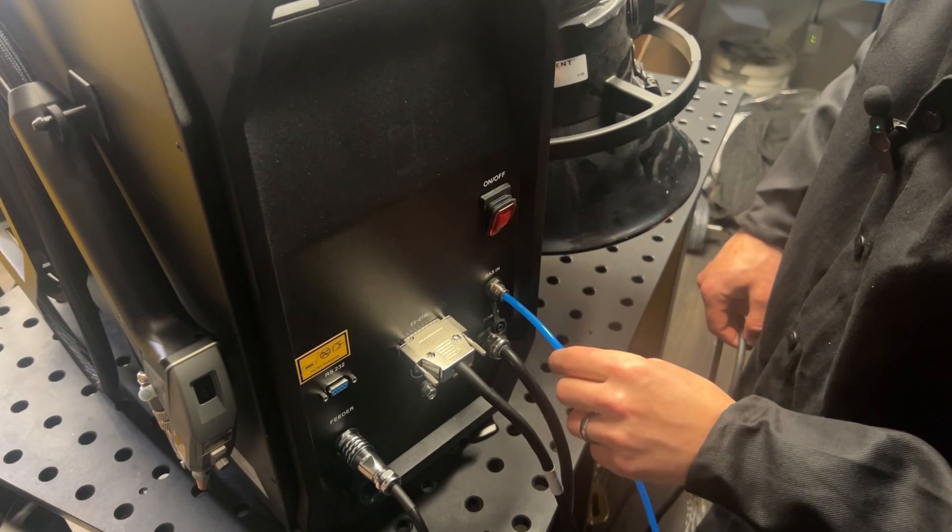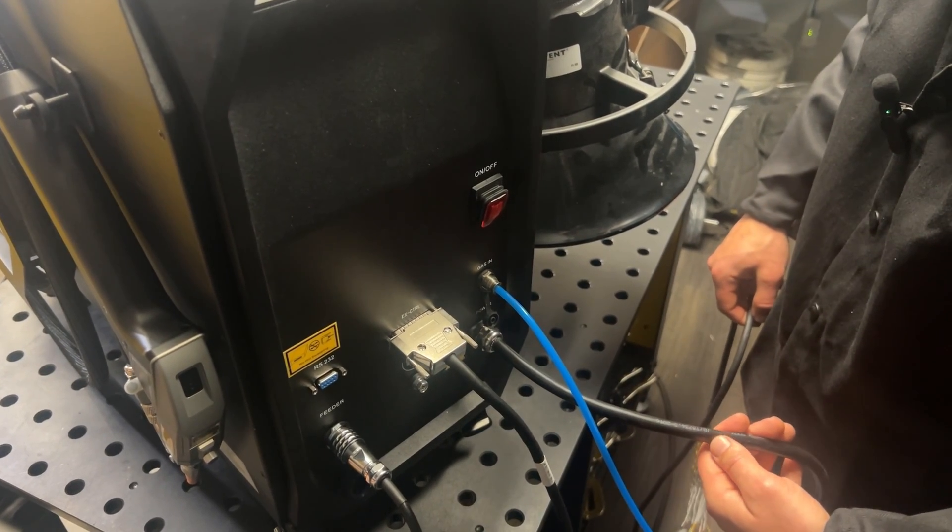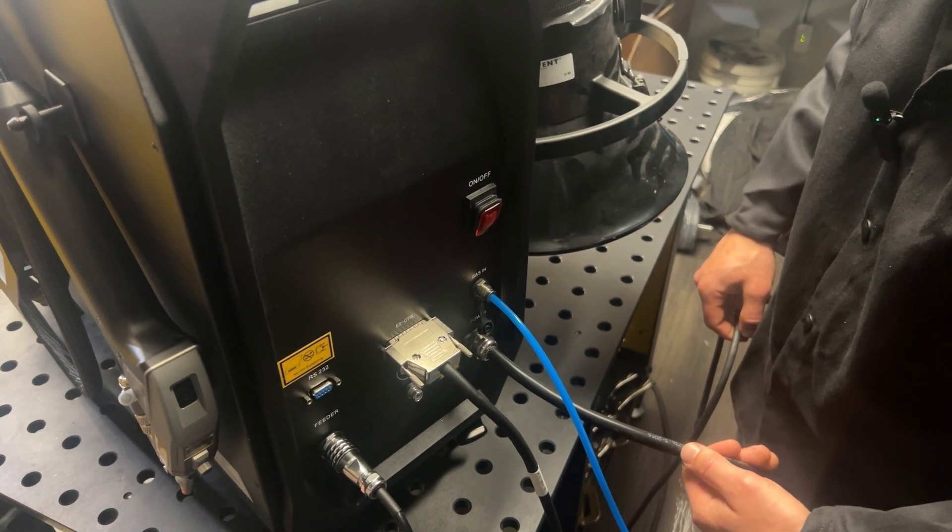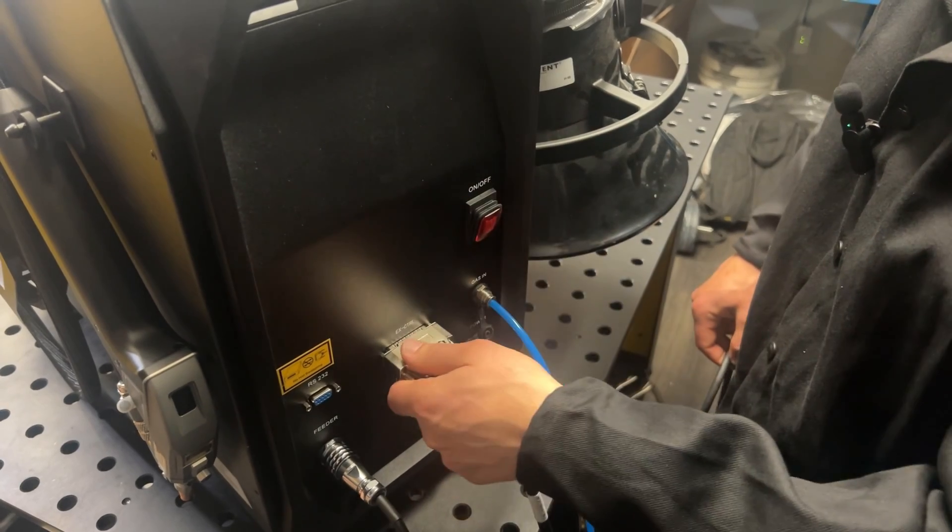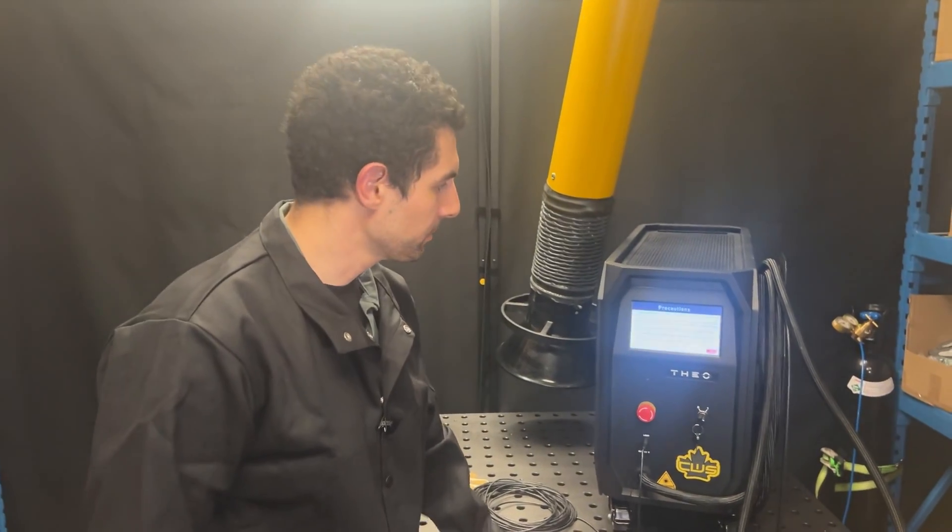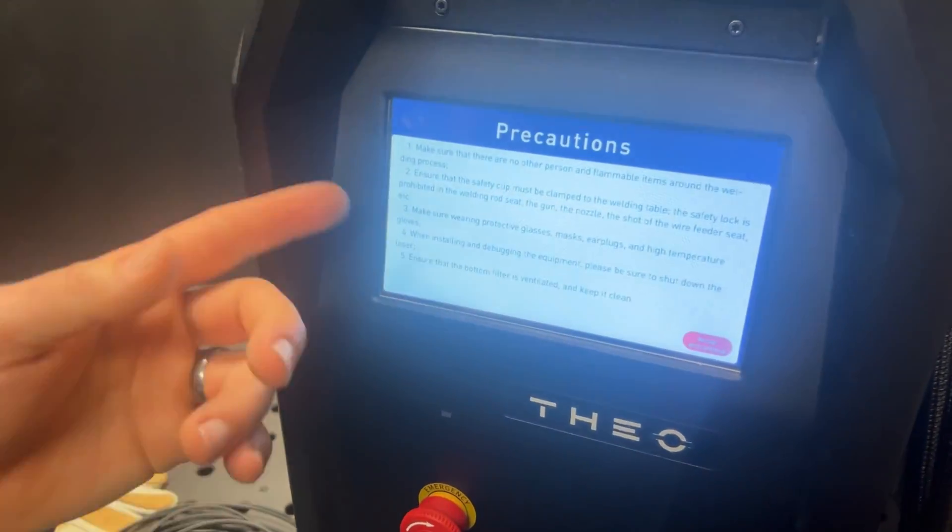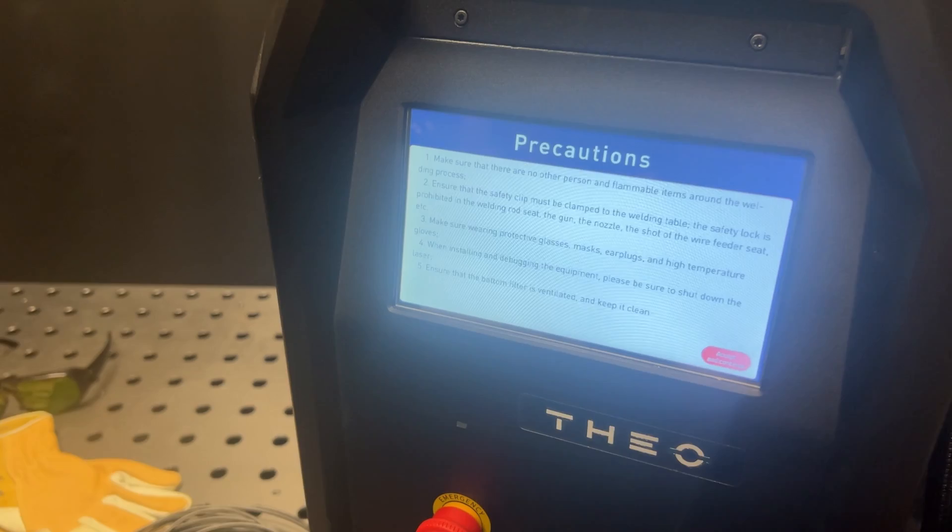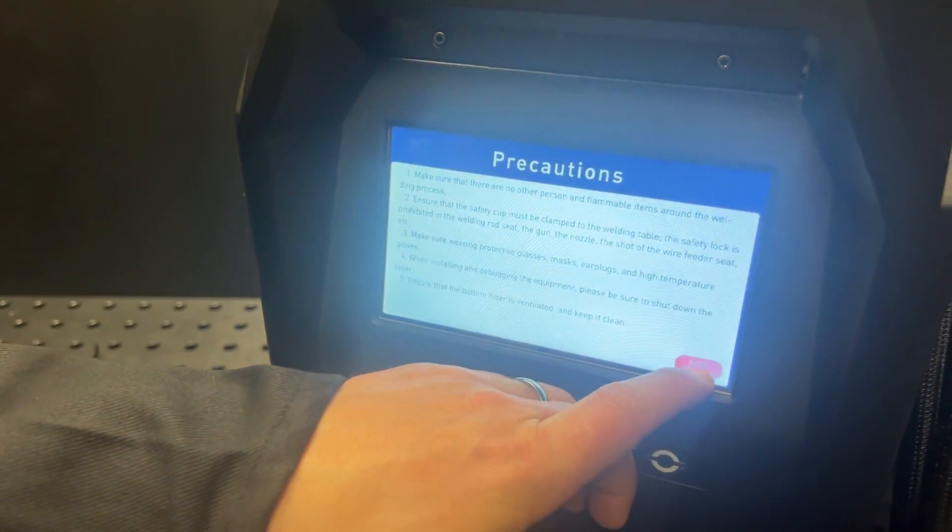Your gas inlet on the right here. These units come with a power cord and a plug. They're 230 volts single phase. Once everything's all set up, hit the on switch. When you first power up the system, you'll get the safety screen. Please take a minute to read through the safety precautions. Once you understand the safety features, press accept and continue.